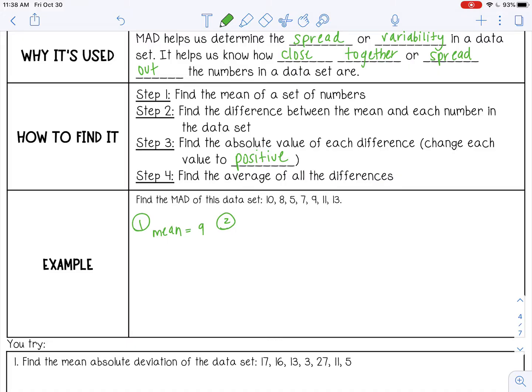Next step is I'm going to take 9 and subtract it from every number in this data set. So 9 minus 10, that's negative 1. 9 minus 8, that's 1, 4, 2, 0, negative 2, negative 4.